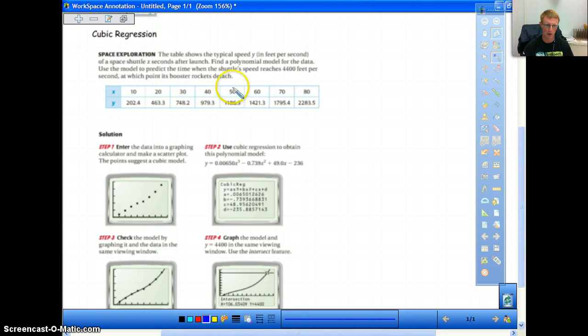So let's read through this problem. It says the table shows the typical speed, y, in feet per second, of a space shuttle x seconds after launch. Find a polynomial model for the data. Use the model to predict the time when the shuttle speed reaches 4,400 feet per second, at which point its booster rockets detach. Basically what we're going to do is they're giving us all of our data. What they want us to do is use our graphing calculator to figure out what would the actual function of this be, because this is not perfect data. It's more of like a scatter, and it kind of goes through below exactly what we're going to do, but I'm going to show you on the graphing calculator what you would want to do.